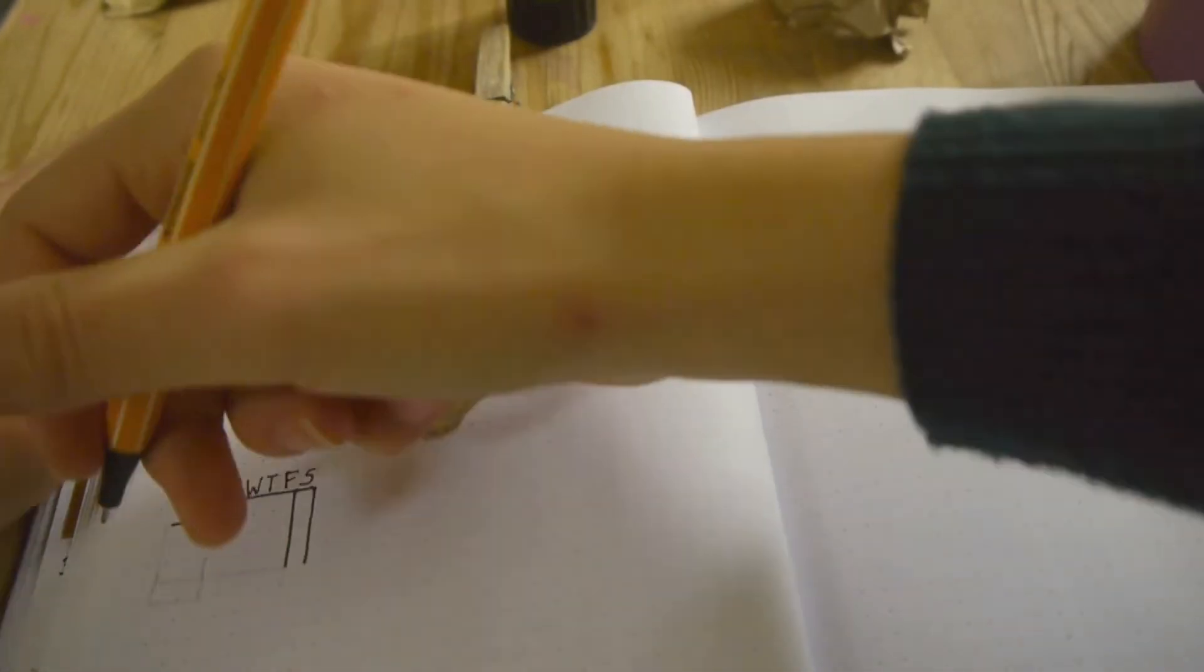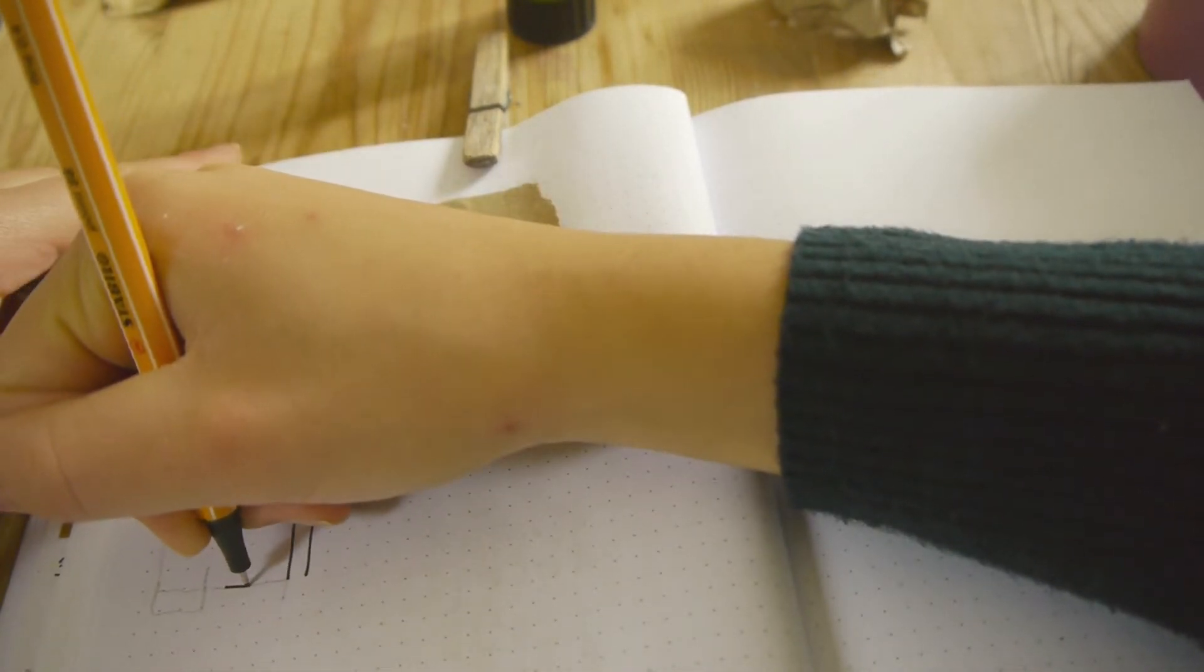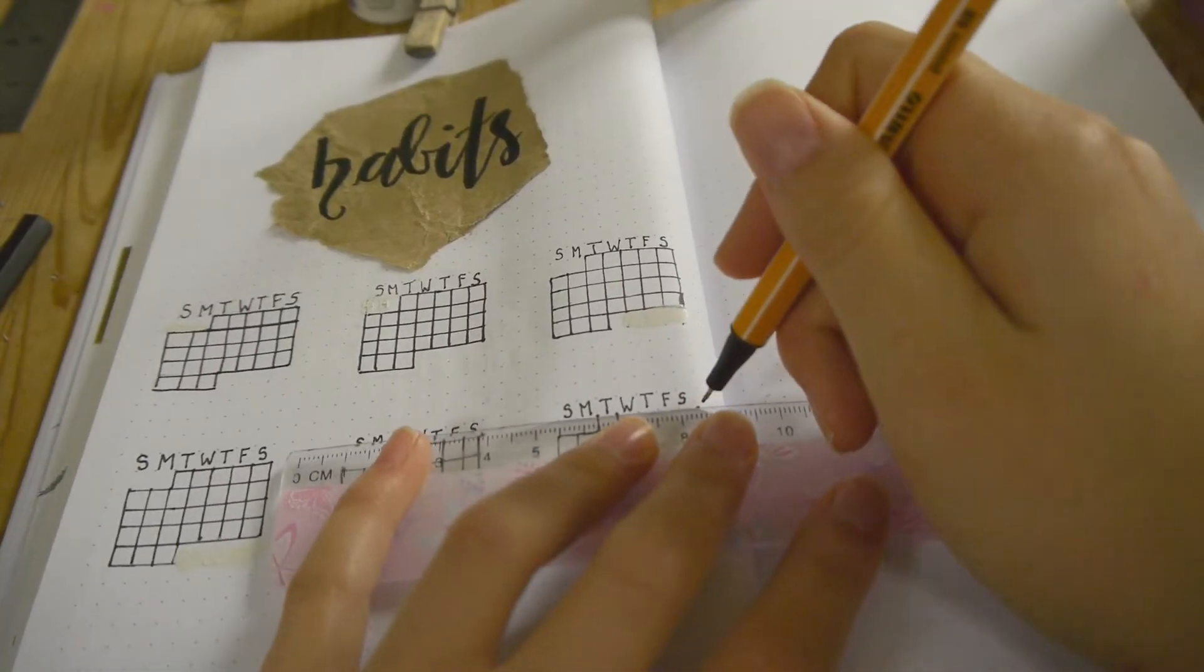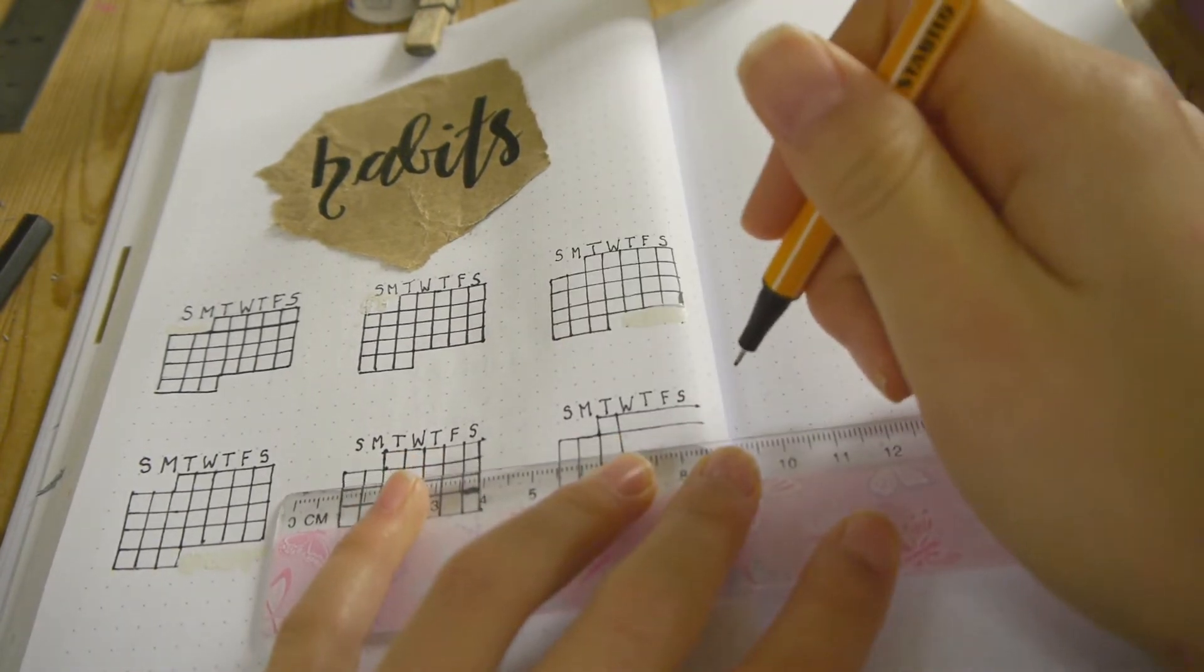Usually I go for a horizontal habit tracking layout, but I really want to try this style which I've seen in several videos. So I'll draw a little month skeleton for each habit individually.